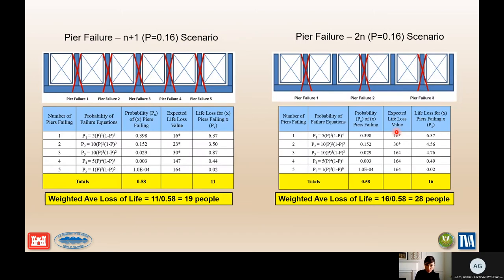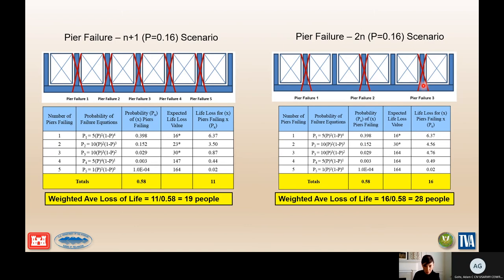It is also important that not only are you evaluating multiple pier scenarios, but where those failures occur can also be important. Depending on which piers are expected to fail, this can change how you establish the breach width and in turn affect your consequence estimates. Make sure you are not taking the most conservative or unconservative approach in estimating which piers would fail, because it can either increase or decrease the weighted average loss of life.